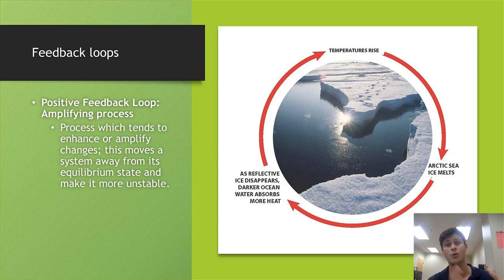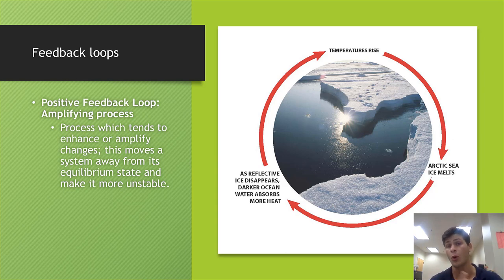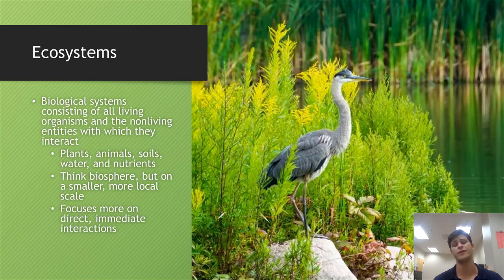When the planet heats up faster, more ice begins to melt. When more ice begins to melt, even less radiation is being reflected, and you can see how this begins to cause the system to spiral out of control. Where a negative feedback loop brings the system back to normal, a positive feedback loop spirals the system completely out of control, amplifying it farther and farther away from its equilibrium state.